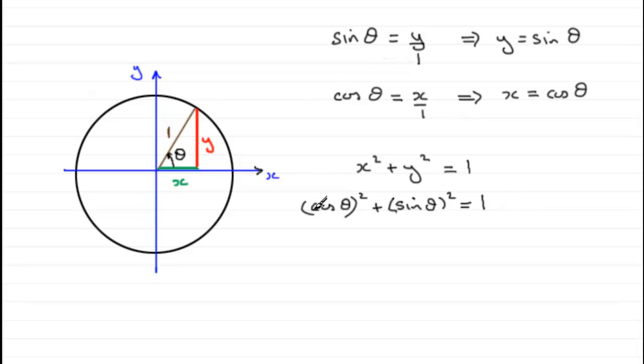Now we don't tend to write this as cos theta all squared. There's another way that we write it. It's written as cos squared theta. And for this one, it would be sine squared theta. And this comes to 1.